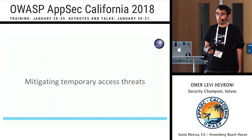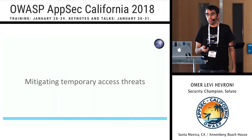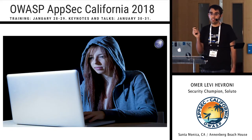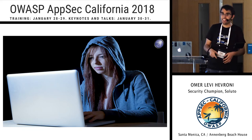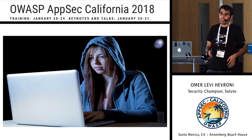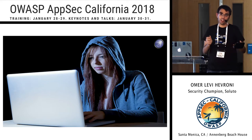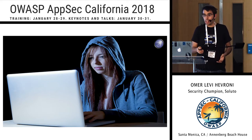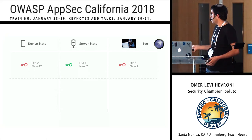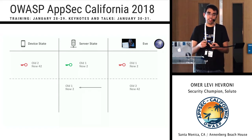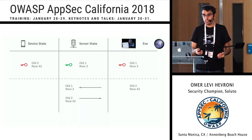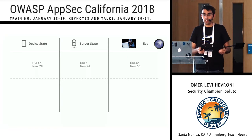Now let's talk about mitigating temporary device access. I want to present Eve - she's the best hacker in the world. Like any good movie hacker, all she needs is her hoodie and a terminal with green characters. Let's say Eve got temporary access to one of our devices and now has the private key and those two numbers. Eve can request a token - she has the private key and the payload, so the request is valid and she gets a token. She was able to impersonate one of our devices.